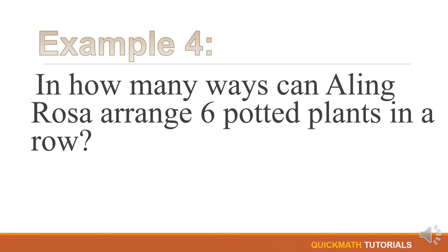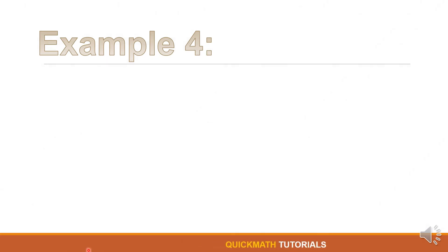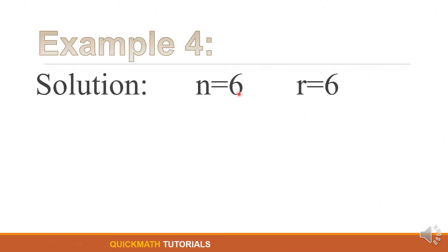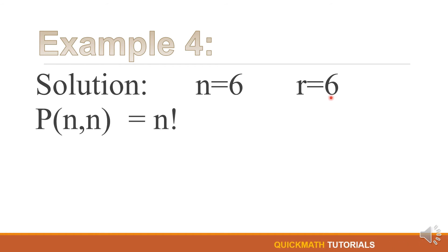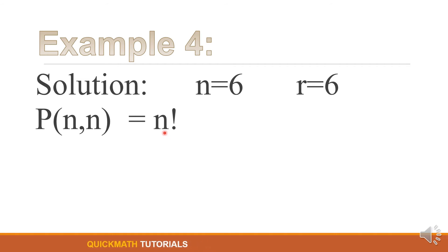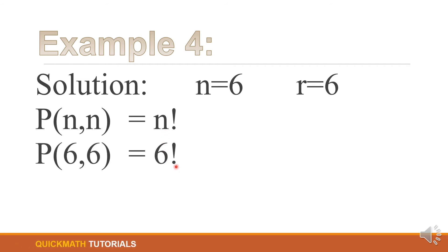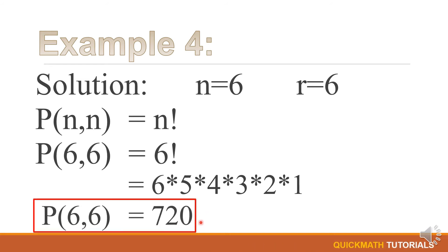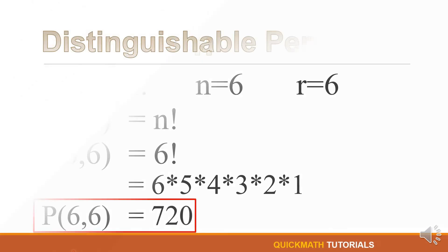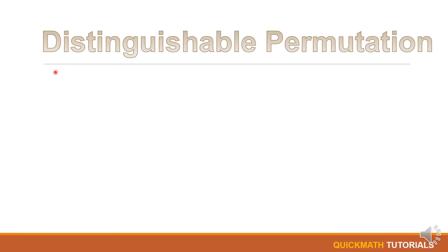For our next example, in how many ways can Aling Rosa arrange 6 potted plants in a row? For our solution, n is equal to 6, and since all 6 potted plants will be arranged, r is also equal to 6. Using the formula for n factorial, we substitute the value of n to get 6 factorial, which is 6 times 5 times 4 times 3 times 2 times 1, equal to 720.